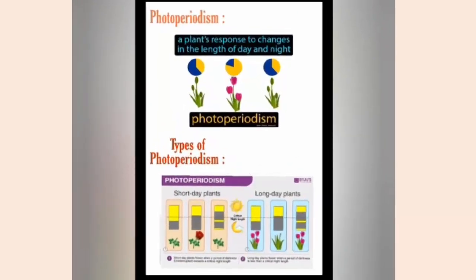Photoperiodism. In the term photoperiodism, photo stands for light and periodism stands for length of the daylight. Response of plants to the relative length of light and dark period with respect to flowering is called photoperiodism. According to photoperiodism, there are three types of plants: long day plant, short day plants, and day neutral plants.